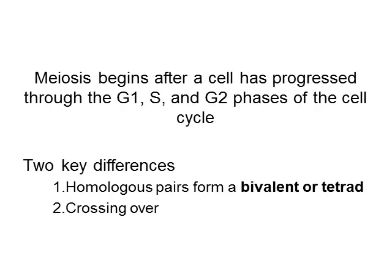Meiosis begins after the cell progresses through the interphase of the cell cycle. So the cell still has to go through G1, the S phase where all the DNA is replicated, and G2 where it collects all the material and gets ready for cell division. The G1, S, and G2 are exactly the same as what we discussed earlier.